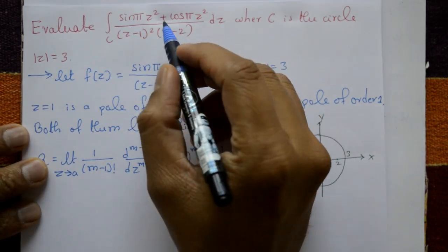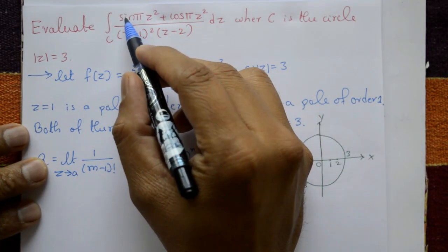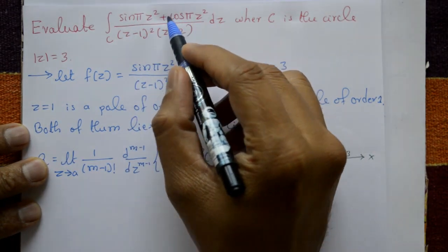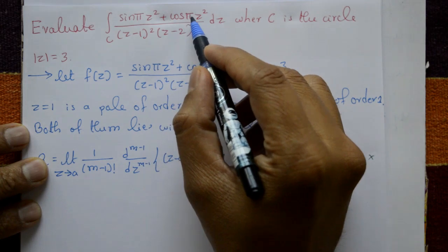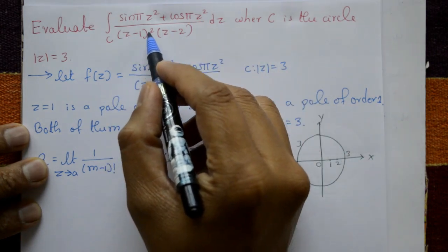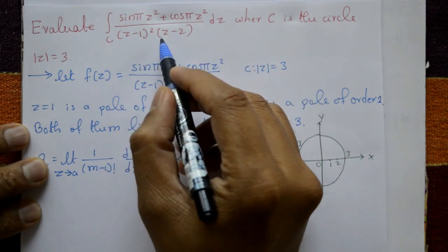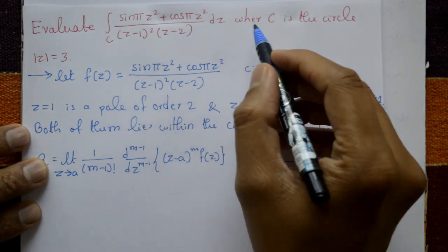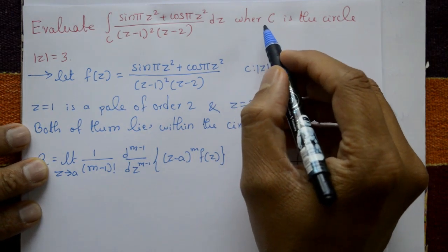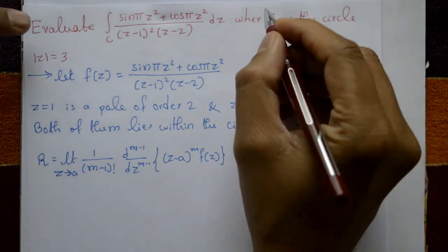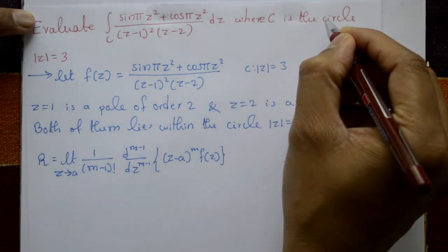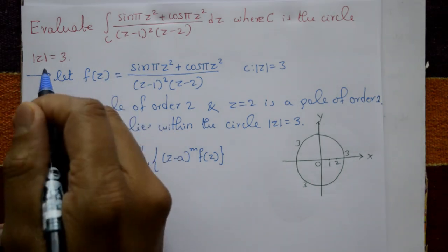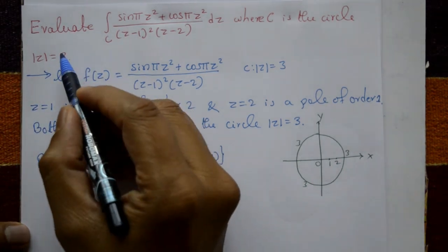Evaluate the integration of (sin πz² + cos πz²) divided by (z-1)² (z-2) with respect to z, where C is the circle |z| = 3.